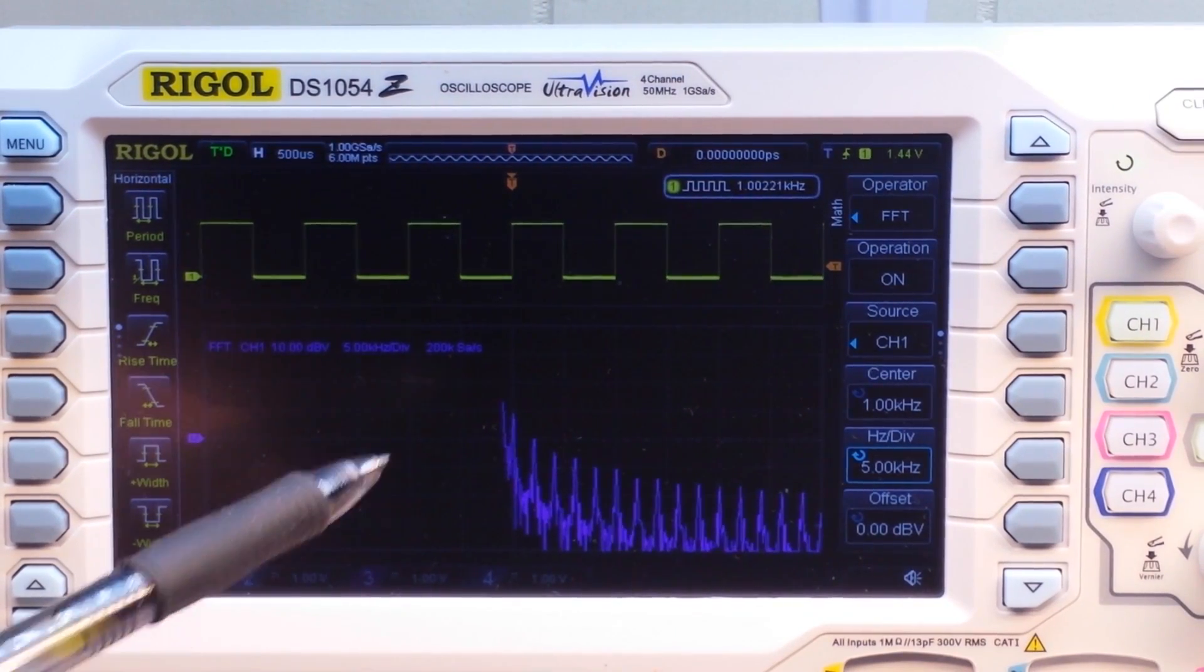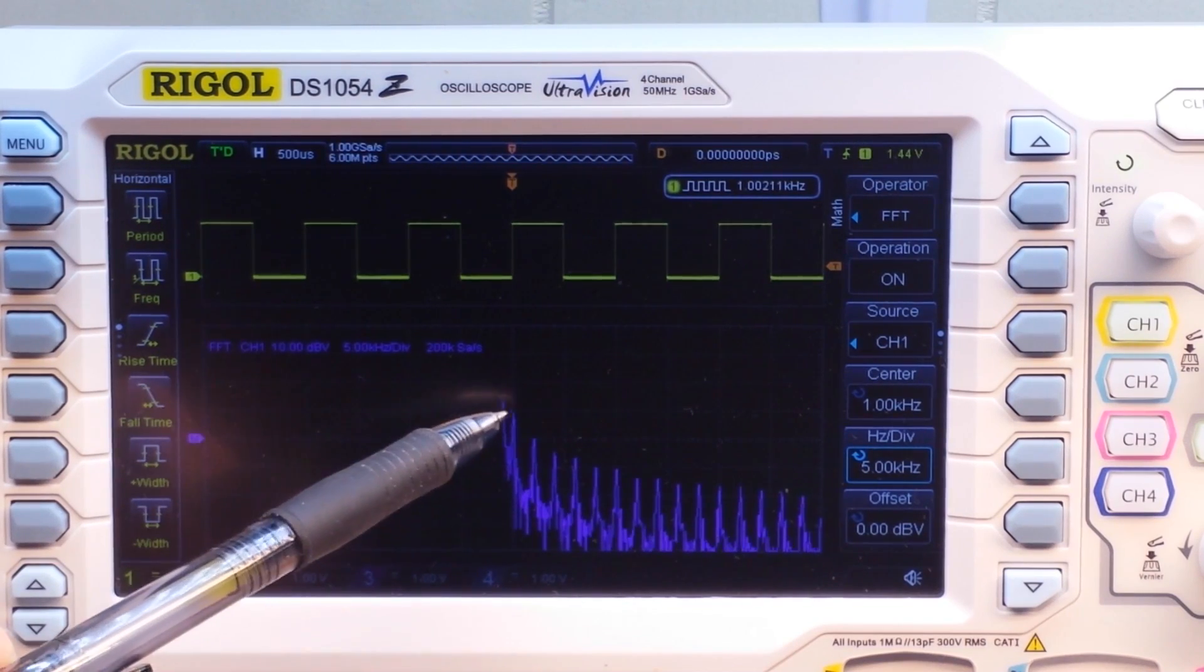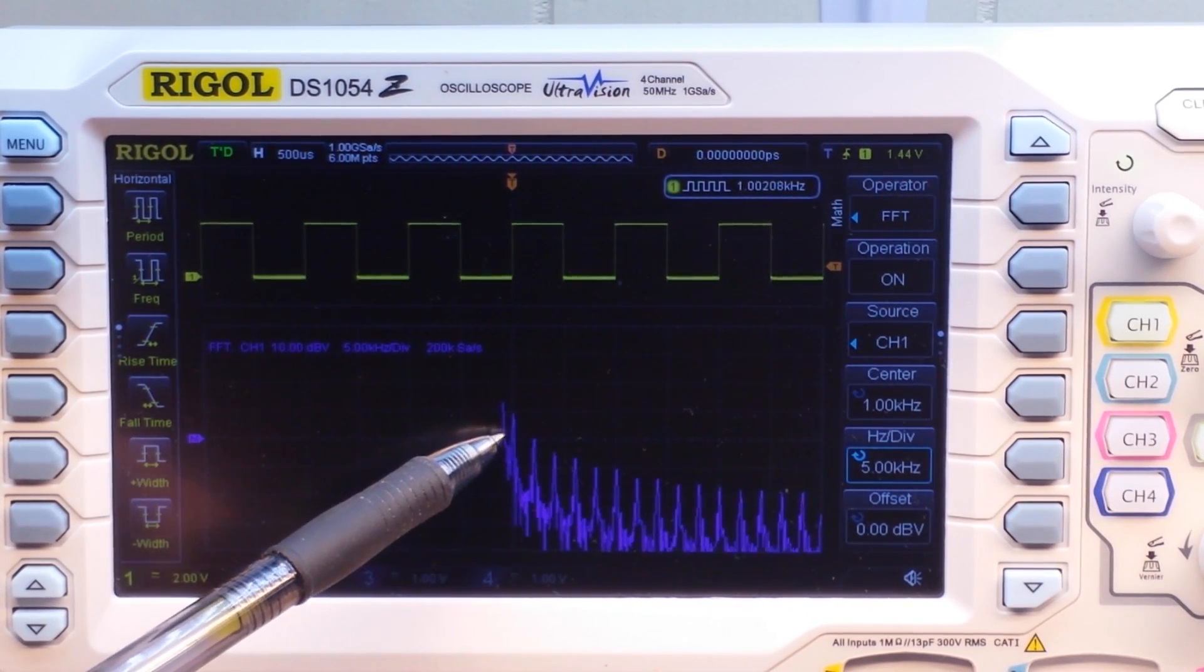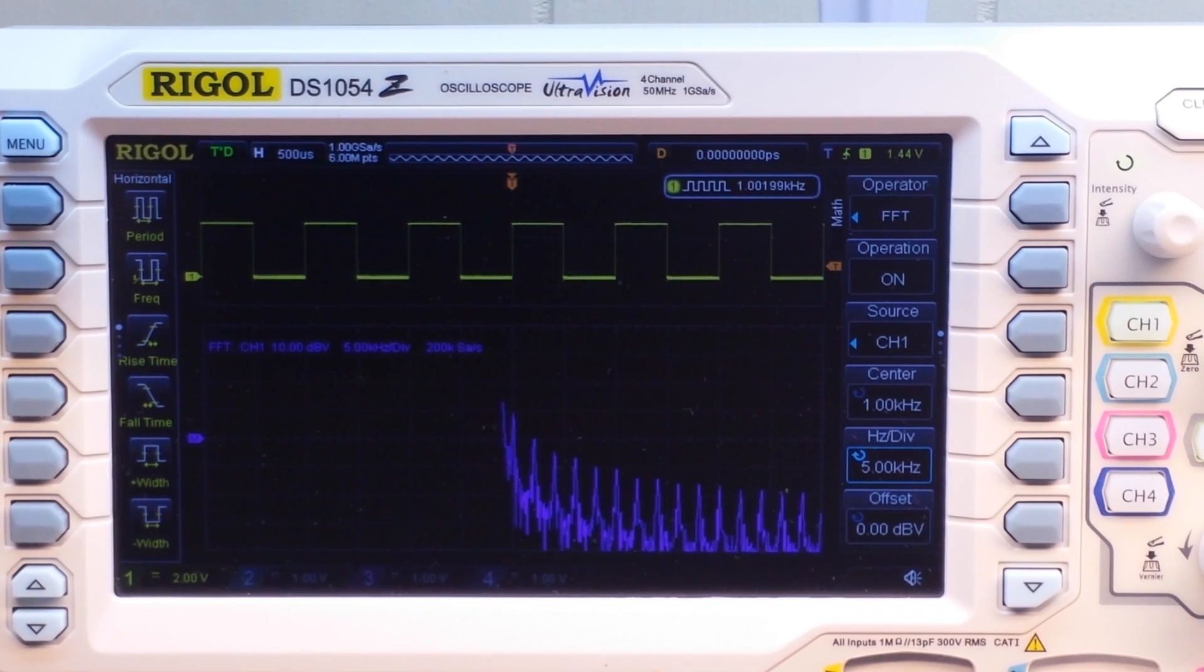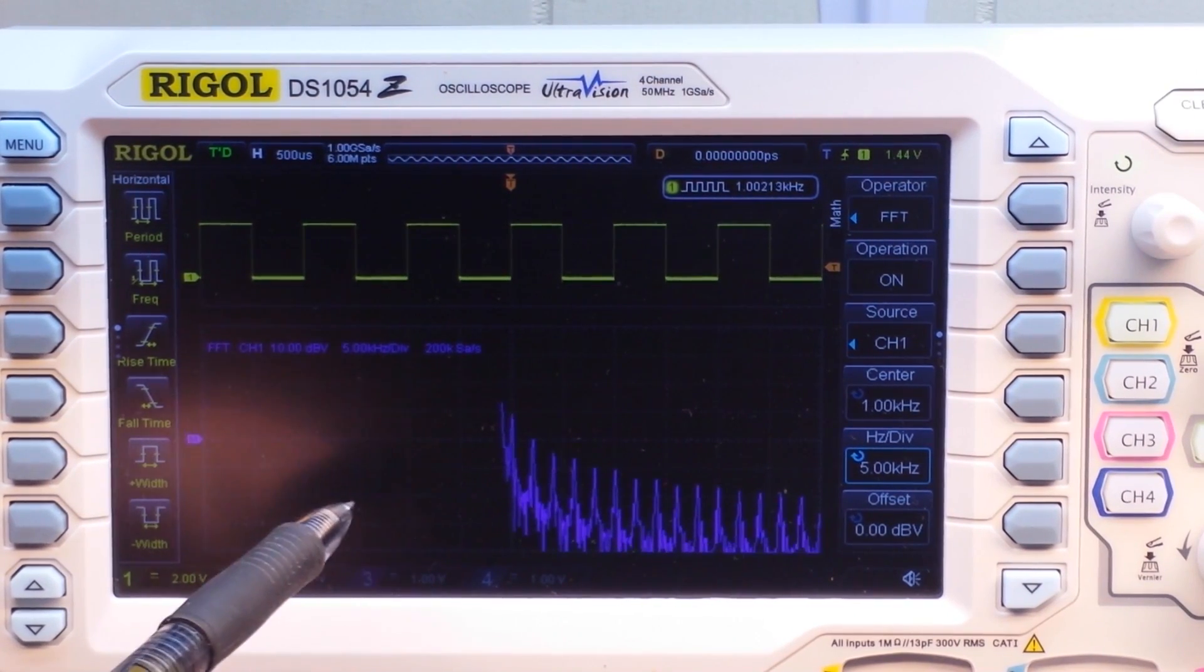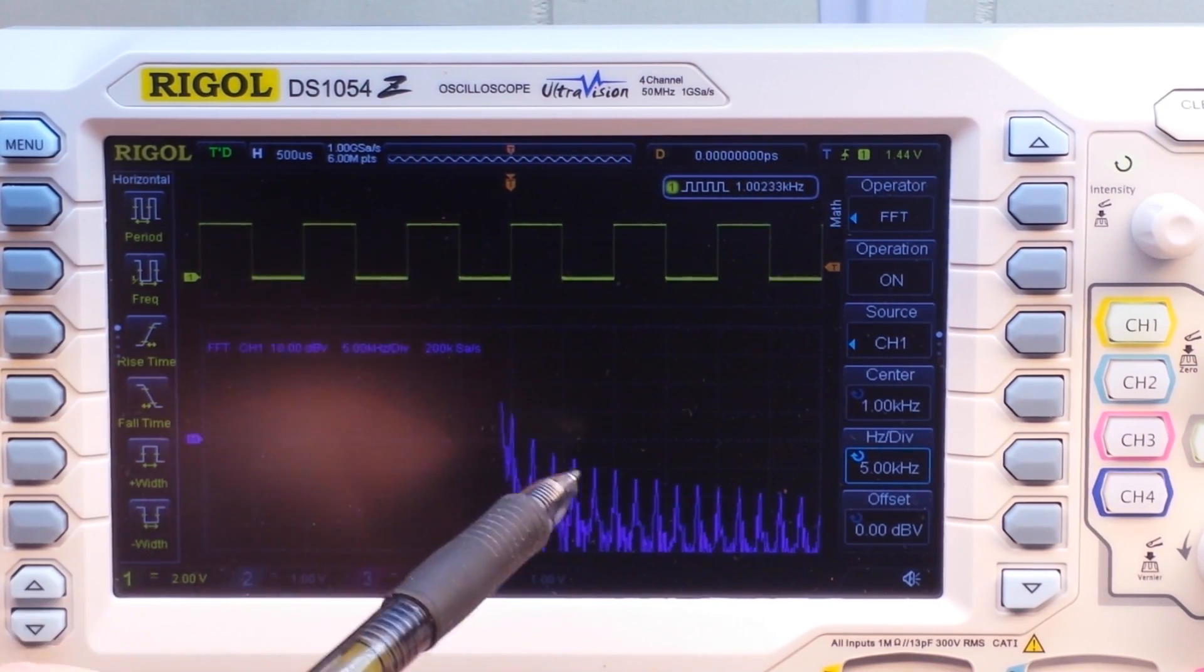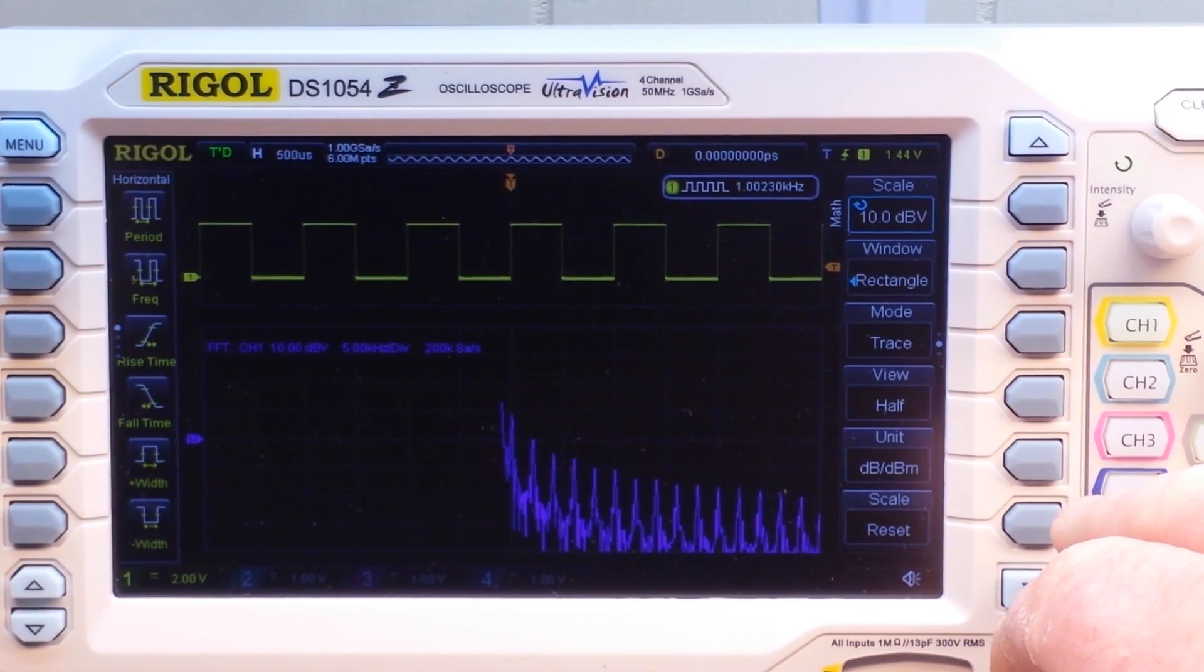You can now see the fast Fourier transform of this square wave. And what you see here in the center at one kilohertz is our fundamental frequency. And these things that you see here, well, those are the harmonics. So what you're looking at now is frequency in the horizontal axis and amplitude in dBm in the vertical axis.